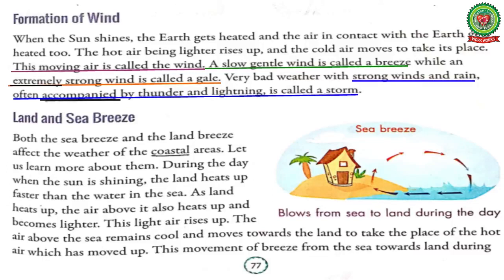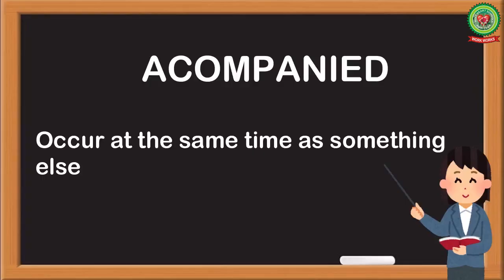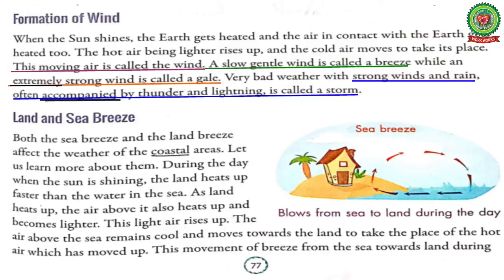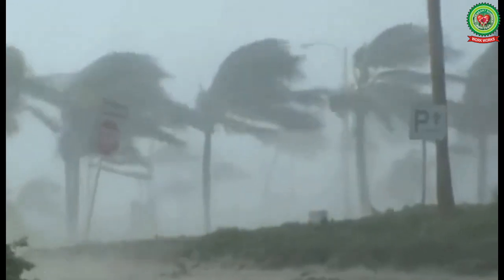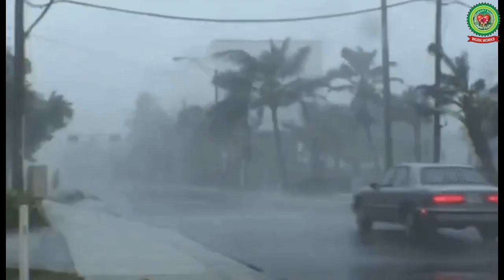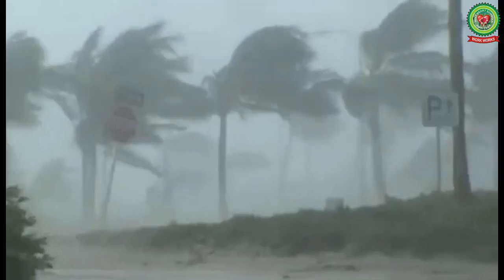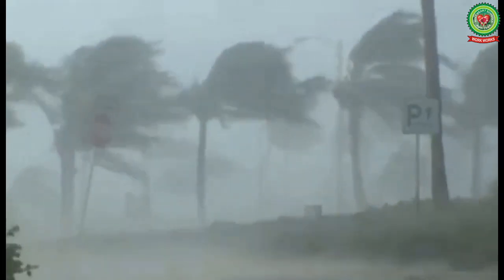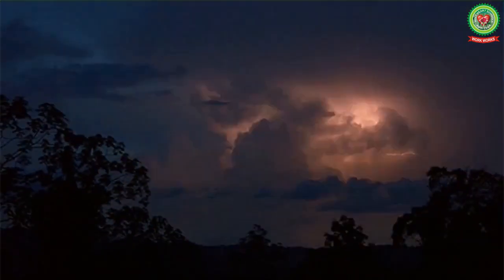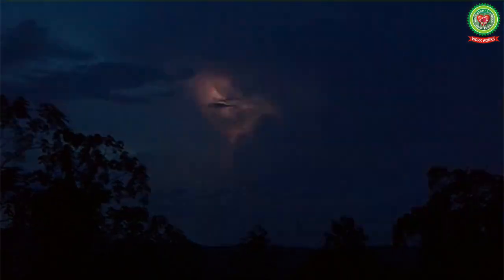Very strong winds and rain accompanied by thunder and lightning is called a storm — underline the word 'accompanied' and write its meaning. A storm is very bad weather with strong winds and rain accompanied by thunder and lightning.